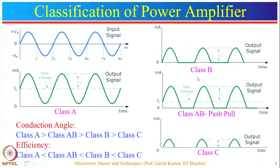One may ask why one should choose class B amplifier if it suffers from distortion. The reason is that the efficiency of class B amplifiers is much higher compared to class A — class B achieves 78 percent efficiency, whereas class A is just 25 percent. This is one of the main advantages of class B amplifiers.